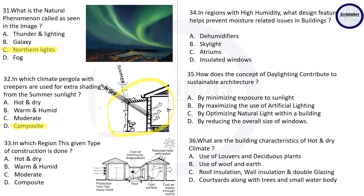Question thirty-three: in which region is this given type of construction done? The answer is hot and dry. Question thirty-four: in a region with high humidity, what design feature helps prevent moisture-related issues in buildings? The correct answer is a skylight. Question thirty-five: how does the concept of daylighting contribute to sustainable architecture? By optimizing natural light within a building.